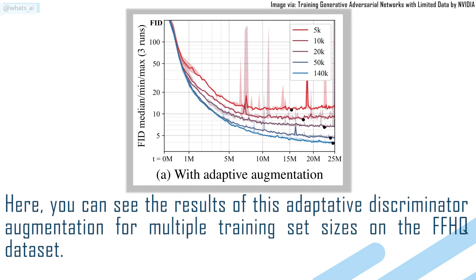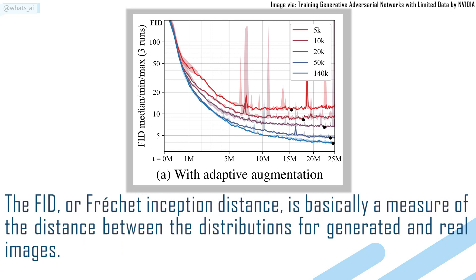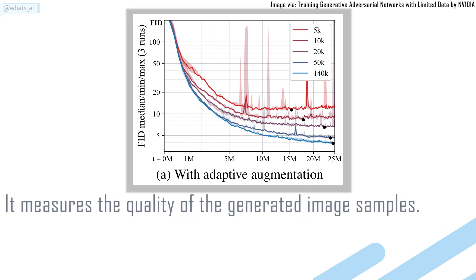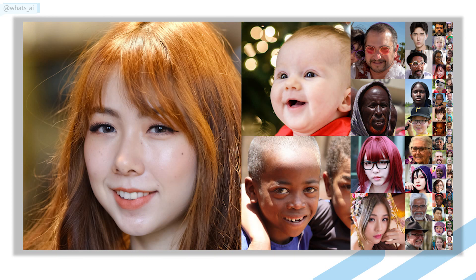Here, you can see the results of this adaptive discriminator augmentation for multiple training set sizes on the FFHQ dataset. Here we use the FID measure, which you can see getting better and better over time and never reaching the overfitting problem where it starts to get only worse. The FID, or Fréchet Inception Distance, is basically a measure of the distance between the distributions for generated and real images — it measures the quality of generated image samples. The lower it is, the better our results. This FFHQ dataset contains 70,000 high-quality faces taken from Flickr, and was created as a benchmark for generative adversarial networks.